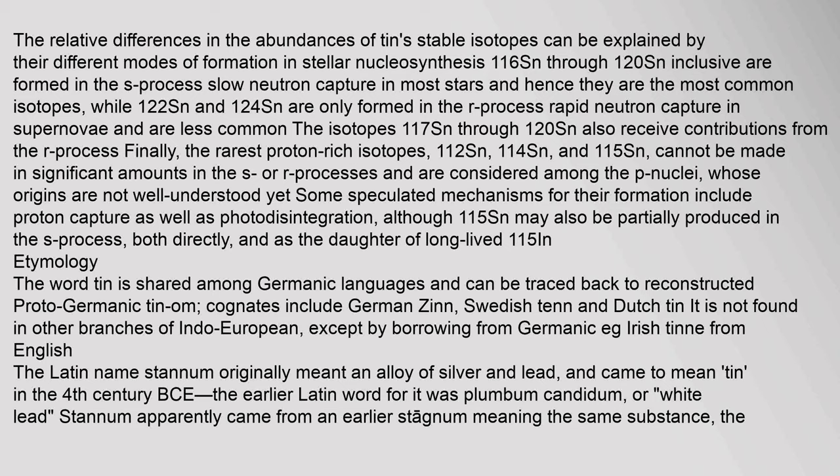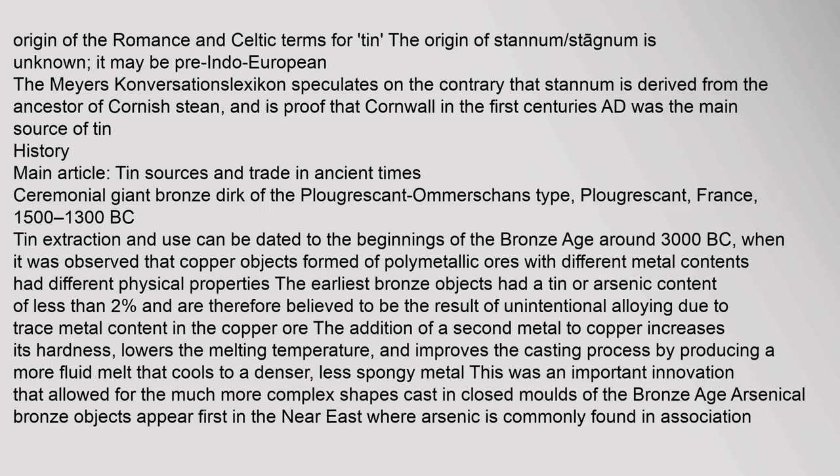The word 'tin' is shared among Germanic languages and can be traced back to reconstructed Proto-Germanic 'tinum'. Cognates include German 'Zinn', Swedish 'tenn', and Dutch 'tin'. It is not found in other branches of Indo-European except by borrowing from Germanic, e.g. Irish 'tin' from English. The Latin name 'stannum' originally meant an alloy of silver and lead, and came to mean tin in the 4th century BCE.